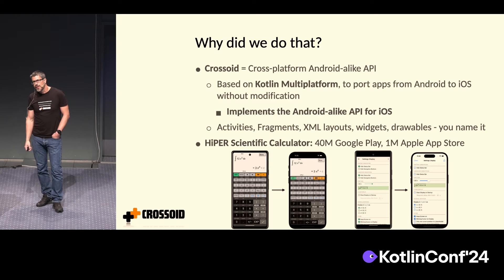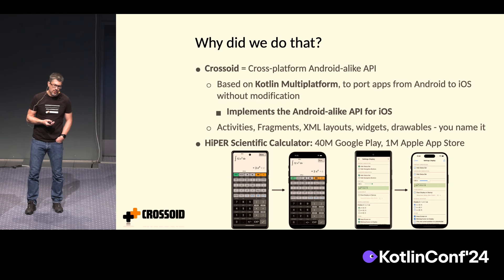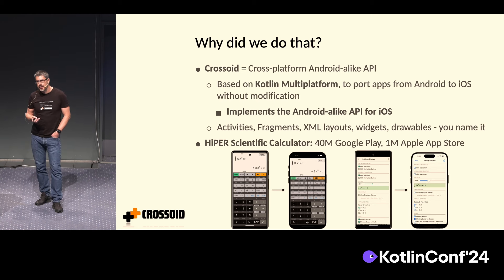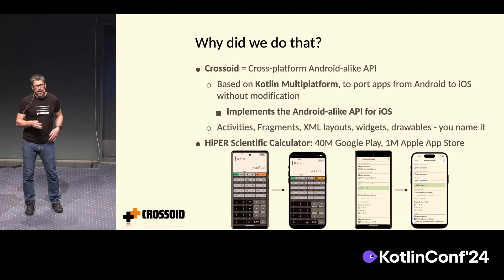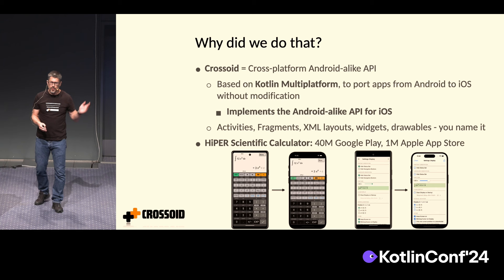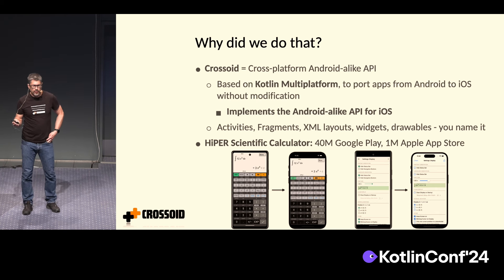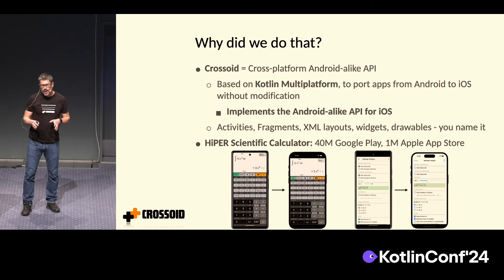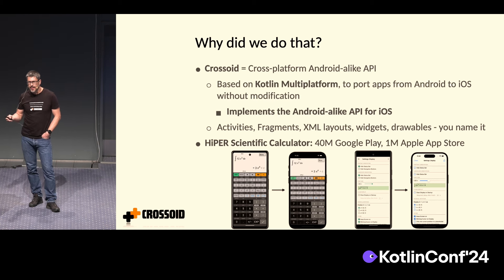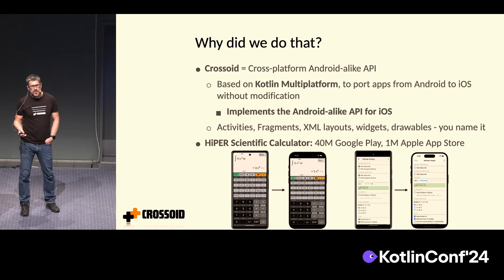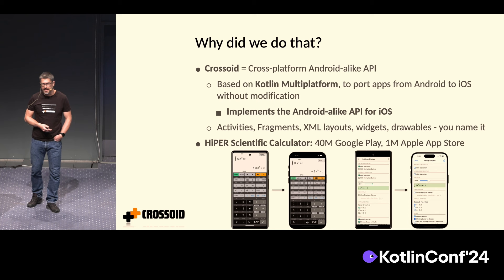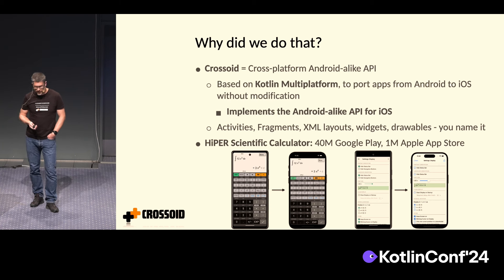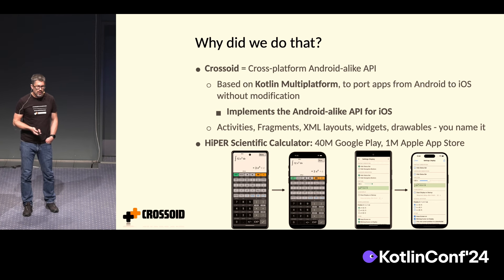So first of all, why did we do that? I work for Crossoid, which is a company that focuses on creating cross-platform Android API. Our focus is that when you have your Android app — quite an old app before Compose — you're still able to bring it to the iOS platform quite easily. We continue development for Android in the common main, but we provide the activities, fragments, XML layouts, and all these things on iOS — we parse the XML layouts and create widgets from that. Our use case here was HyperScientific Calculator, which uses Crossoid. It has about 40 million downloads on Google Play and 1 million on the Apple App Store. For that, we needed BigDecimal.